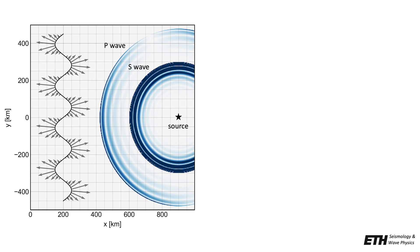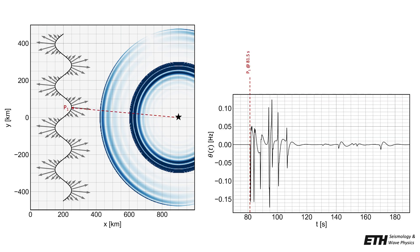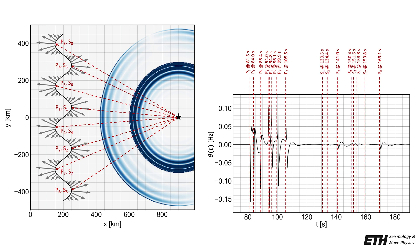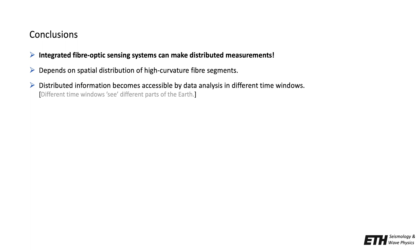Let's look at a toy example to understand what this may mean in practice. We consider a source that radiates a wave field consisting of a P and an S wave. The wave field is recorded by a fiber optic cable characterized by its local curvature vectors, shown as gray arrows. After about 81 seconds the P wave reaches the nearest high curvature segment of the cable and thereby produces a strong phase change signal. After 84 seconds it reaches the next high curvature point, which produces the next large amplitude change, and so on and so forth. At a later stage, the S wave also reaches the various high curvature points, which produces a corresponding set of optical phase change signals.